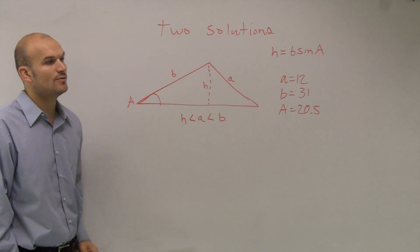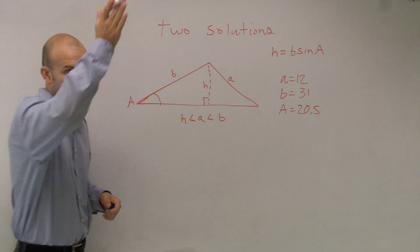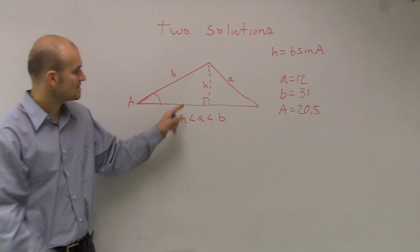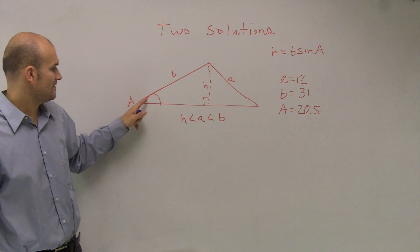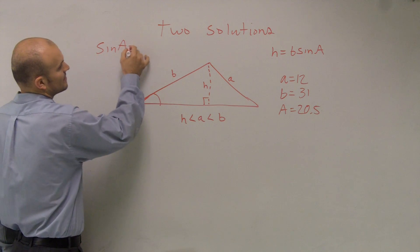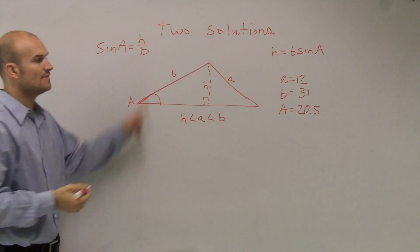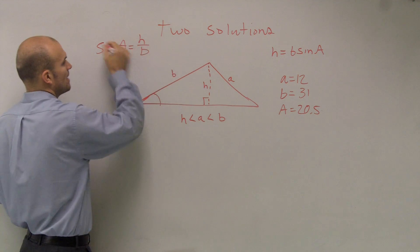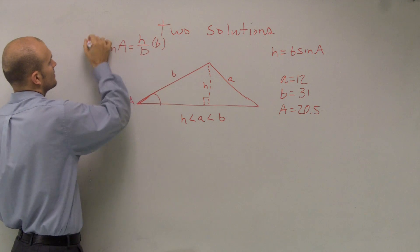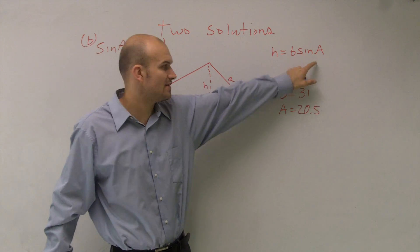So first of all, how do we figure out what H is? H is going to be your direct line down for your height. To figure out H, if you're given A, it simply is sine of A equals your opposite over your hypotenuse. And if I want to figure out what H is, I multiply by B on both sides. And what I get is H equals B times sine of A.